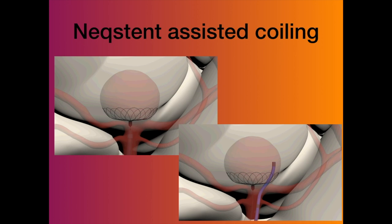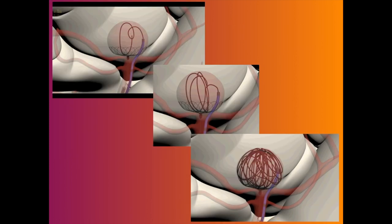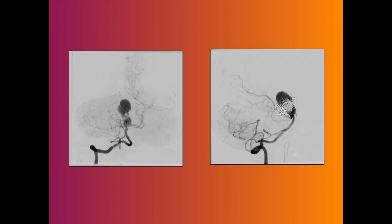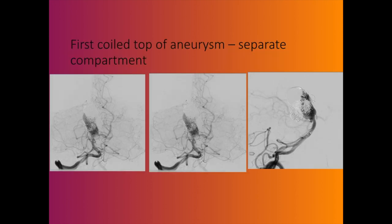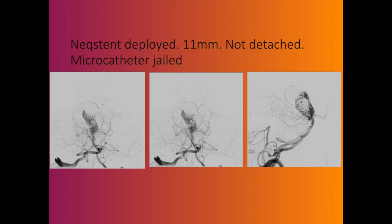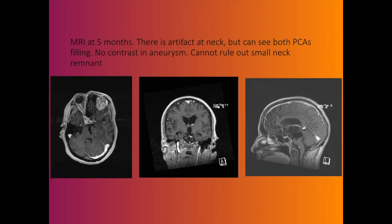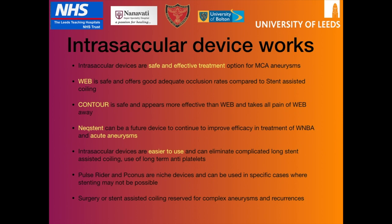There is also the nExt device — a neck bridging device with less braiding than Contour but you can go through it to coil the aneurysm. It has the big advantage of being usable in acute aneurysms too. In this case with significant recurrence, coils were placed at the top, then an nExt device dropped at the bottom, and coiling continued — resulting in complete occlusion confirmed on follow-up angiogram.